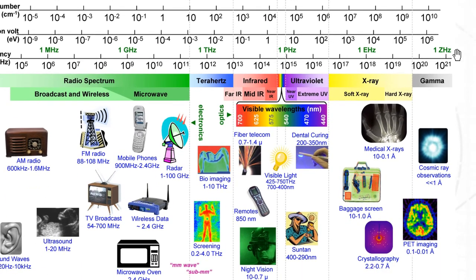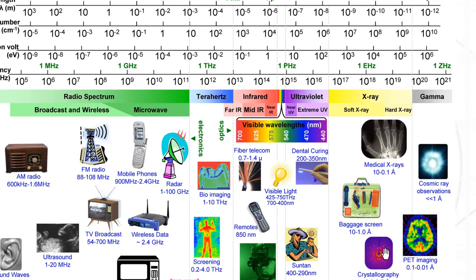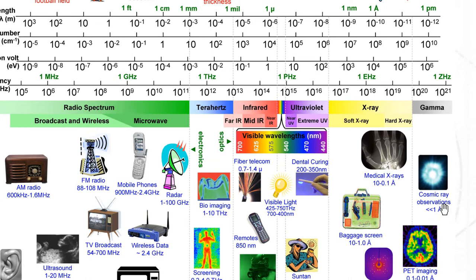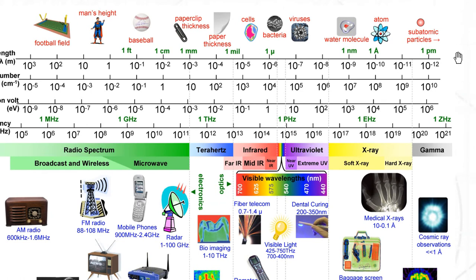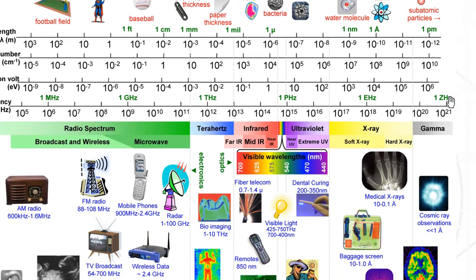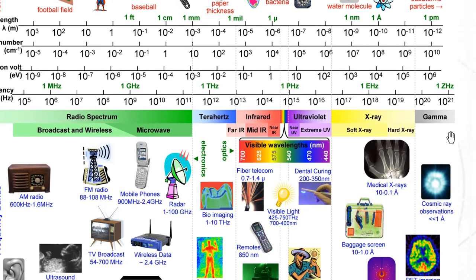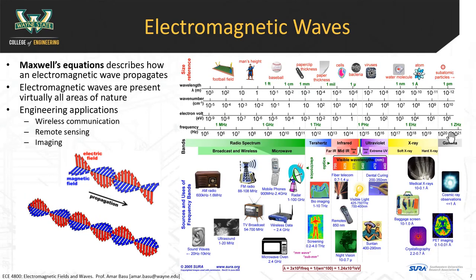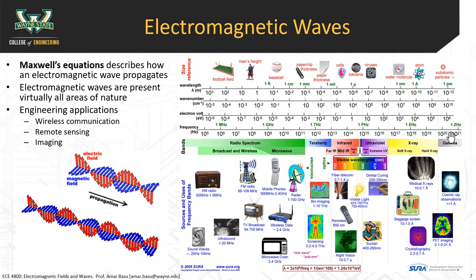PET — positron emission tomography — is a high-resolution biomedical imaging technique; Wayne State has a big PET center. It's more difficult to generate than X-ray or MRI imaging but is worth being aware of. At even higher energies with subatomic wavelengths and frequencies around 10²¹ Hz, we have gamma rays. Astronomical objects give off gamma radiation, and that kind of radiation would be harmful to individuals.